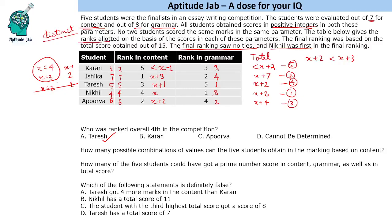For X equals 3, Karan must score less than 2, so only 1 is possible. The content scores would be 6, 5, 4, 3, and 1. Since X equals 4 gives two possible combinations and X equals 3 gives one possible combination, there are three possible combinations in total.